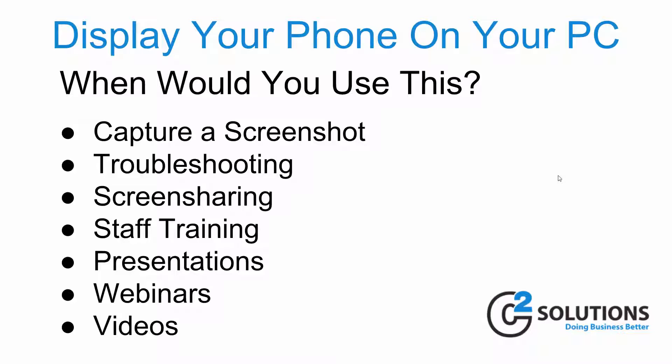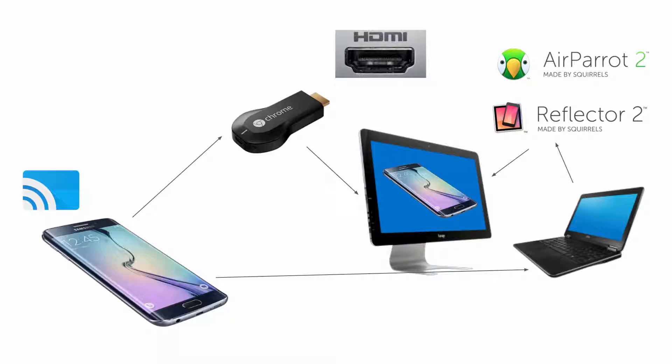Staff training is a really obvious one in the business setting because phones are so prolific in business now — just throw your phone up onto your PC and show the team how to do something. Presentations is another really obvious one; in most boardrooms there's a display with a computer attached and you can present your phone up there if you need to. Webinars and videos is also a really common one, just like I'm doing now. So let's dive in and show you, but first let me show you the things you'll need to make this work.